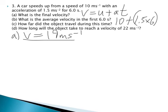Question B. What is the average velocity in the first 6 seconds? So we are taking the average of two numbers. It is the initial plus the final velocity V, divided by 2. So in this case, it is 10 plus 19, divided by 2. 29 divided by 2 gives you 14.5 metres per second.